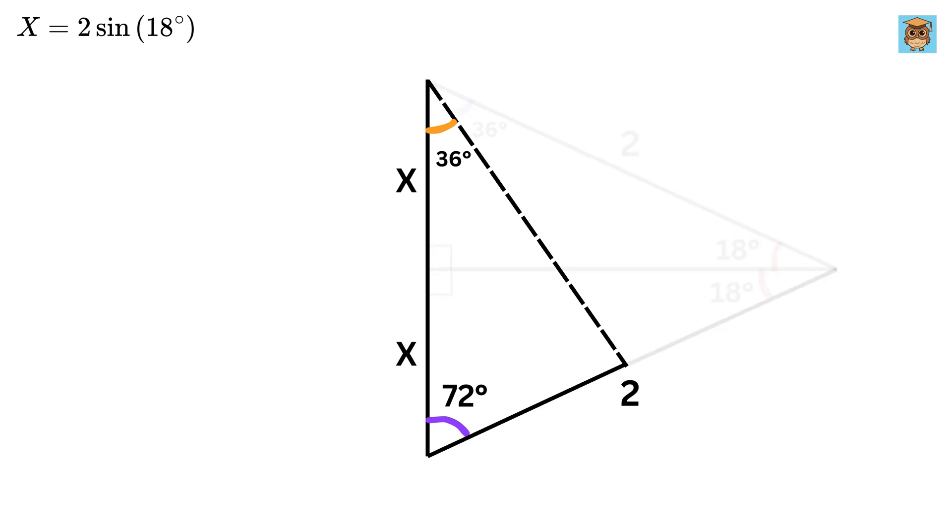Then consider this triangle. This angle is 72 degrees and this angle is 36 degrees, so this angle will be equal to 180 minus 72 minus 36, or 72 degrees. Right. Oh look, both of them are 72 degrees, which means this triangle is an isosceles triangle. Therefore, both these sides will also be of equal length.